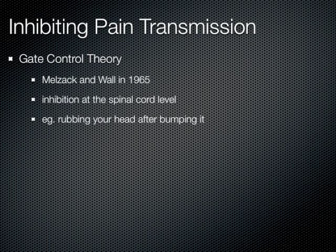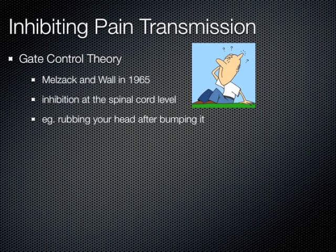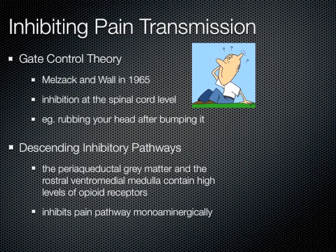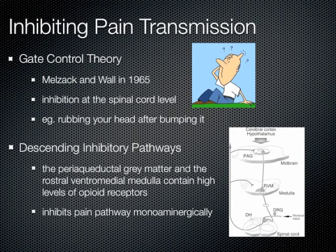There are two ways pain is inhibited in the body. The first is gate control theory, developed by Melzack and Wall in 1965, which describes inhibition at the spinal cord level. This explains why rubbing your head after bumping it makes it hurt less: rubbing activates A-beta fibers, which activate inhibitory interneurons in the dorsal horn, inhibiting pain signals transmitted by C fibers. The second method involves descending inhibitory pathways. The periaqueductal gray matter and rostral ventromedial medulla contain high levels of opioid receptors, explaining why opioids are analgesics. These pathways project into the dorsal horn, inhibiting pain transmission monoaminergically — using monoamine neurotransmitters like noradrenaline and serotonin.